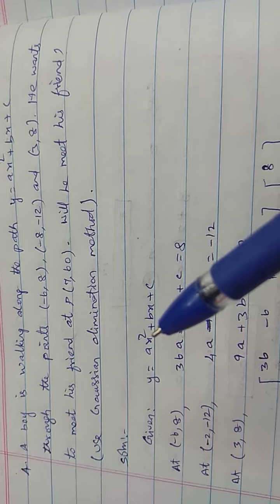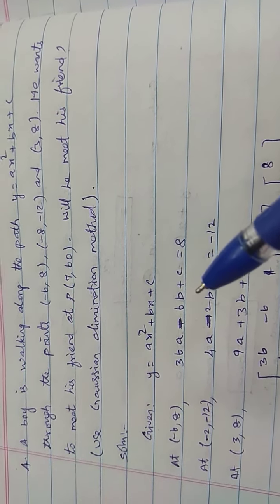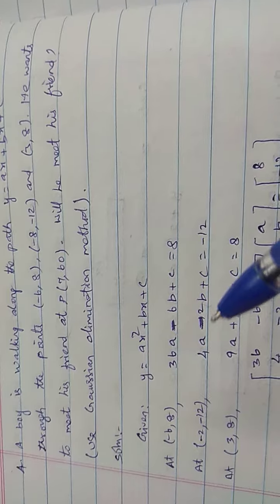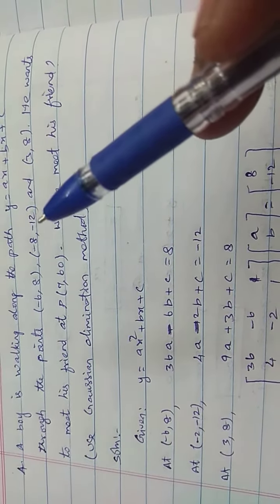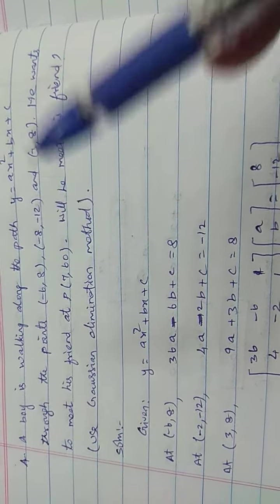(-6) squared: 36a, -6 into b: -6b, plus c equals 8. Next, (-8, -12).